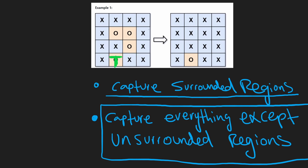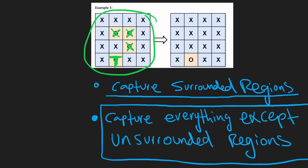Now we're going to do a double nested loop, iterating through every single row in the input grid. Anytime we see an O value, we're going to change it into an X, because now we know for sure that any remaining O is definitely part of a surrounded region — since any unsurrounded regions we already changed to T's. So anytime we see an O we change it to an X, and when we get to a T we ignore it. That's the second phase of the algorithm.